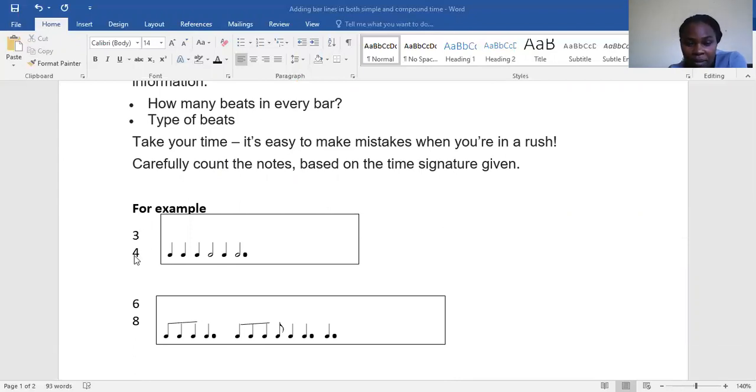The first example is in simple time. As you can see, we have 3/4, and 3/4 means we have three crotchet beats in every bar. I'm going to show you how to begin. You are going to count three crotchet beats, and where the three crotchet beats end, you are going to put your bar line there.